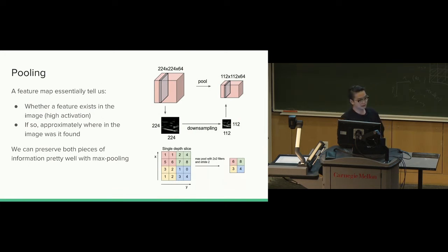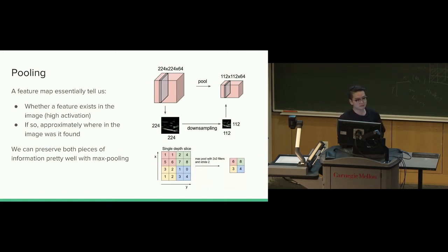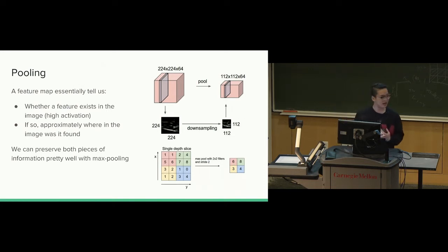Next: pooling. Pooling is a very important operation in the CNN because you want to magnify the features you extract. There are two types of pooling: average pooling and max pooling. Max pooling is the most common — there are no learnable parameters in the pooling filter; it just finds the maximum value in the window.